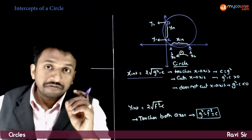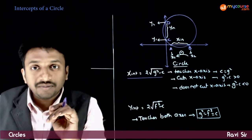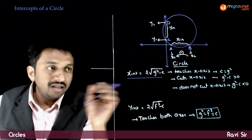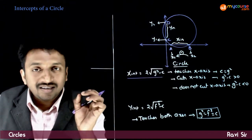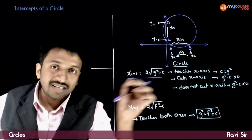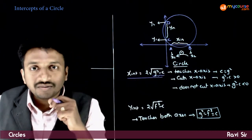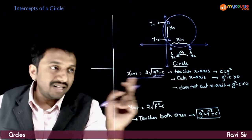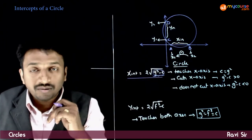So the x-intercept of the circle is 2√(g² − c) and the y-intercept is 2√(f² − c). Now, the different cases: if the circle touches the x-axis, the two points coincide and the x-intercept is zero, so g² = c. If the circle cuts the x-axis at two points, then g² > c, giving a positive value inside the square root and a finite x-intercept.